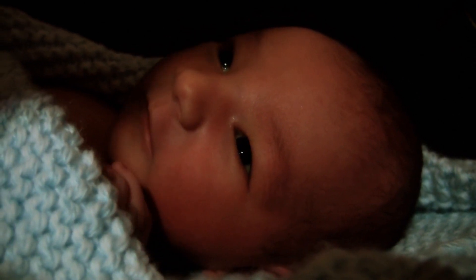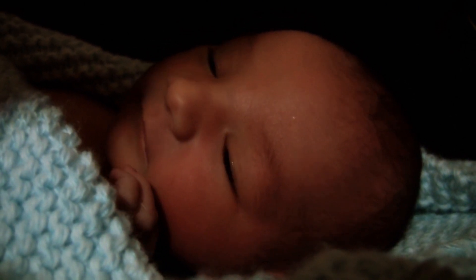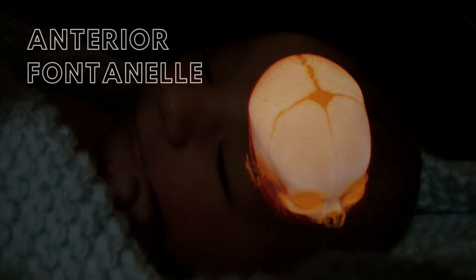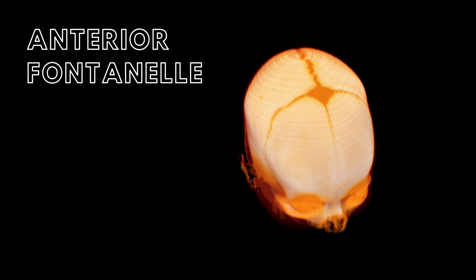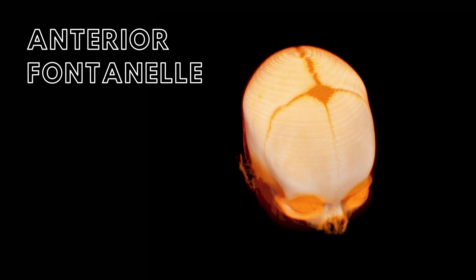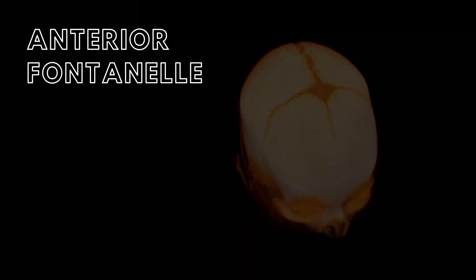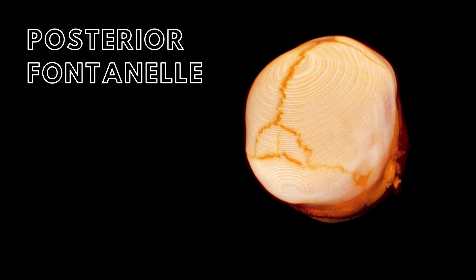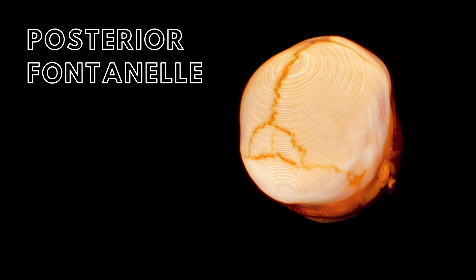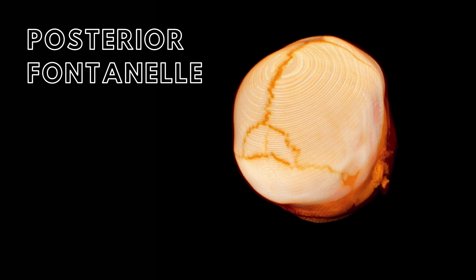Infants have two soft spots on the cranium called fontanelles. The anterior fontanelle is at the top of the middle of the head and closes between 9 to 18 months. The posterior fontanelle is at the back of the middle of the head and closes by one to two months, and sometimes is already closed at birth.